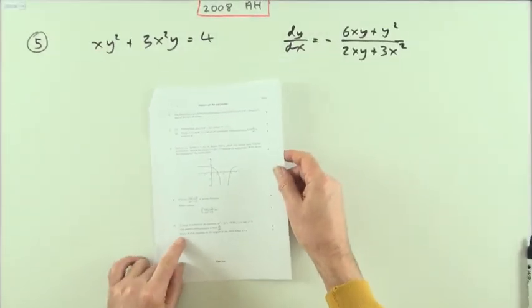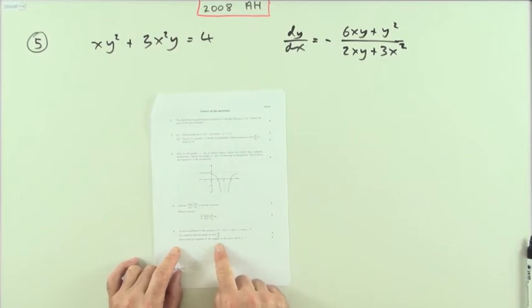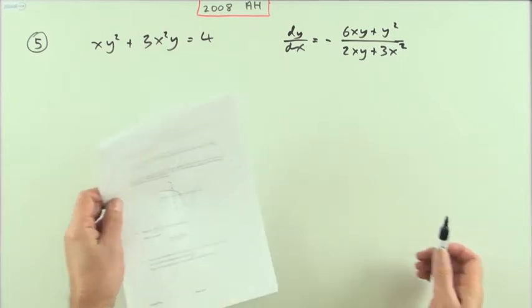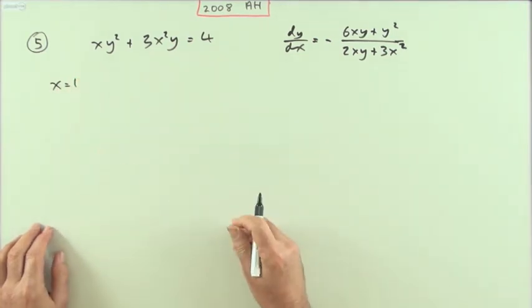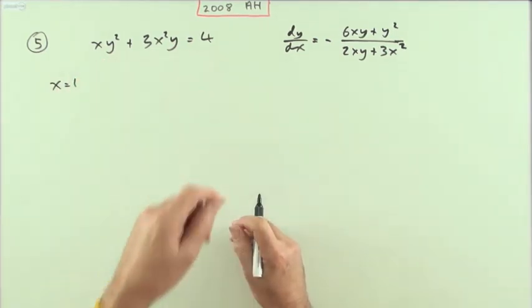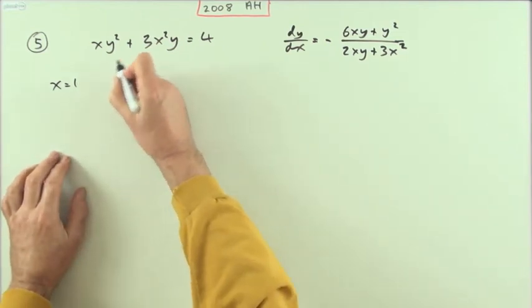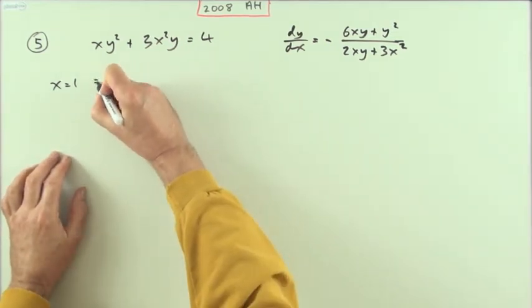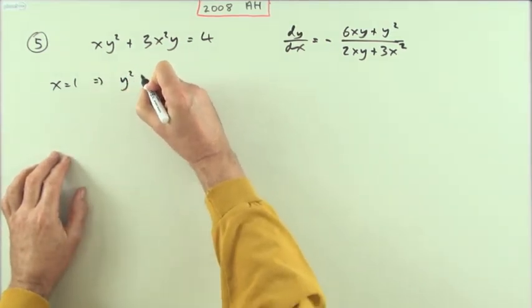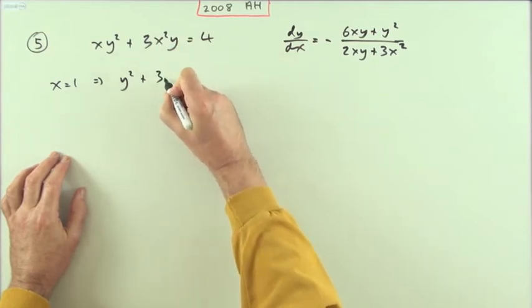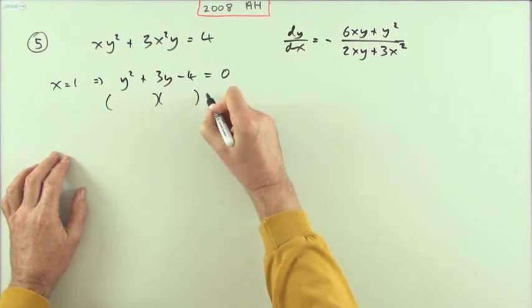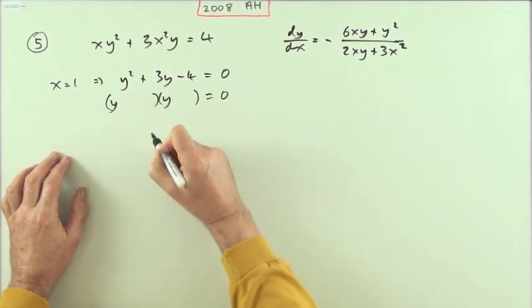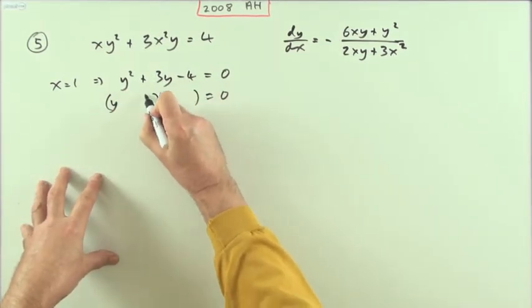Then part five, find an equation of the tangent to the curve where x equals 1. Well if x equals 1 then feeding it into the coordinate equation will give me the coordinates. Putting 1 into that leaves me with I'm going to have y squared plus, and if 1 plus 3y, take that 4 across, minus 4 equals 0. So there's a little quadratic just to factorize. So factors of 4 that differ by 3 must be 1 and 4.